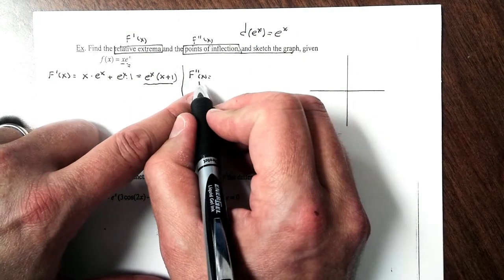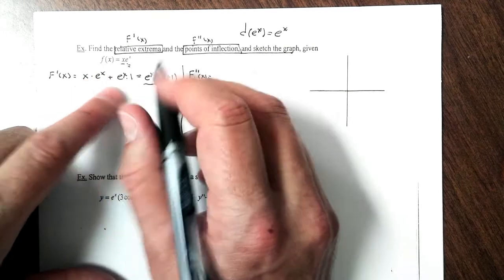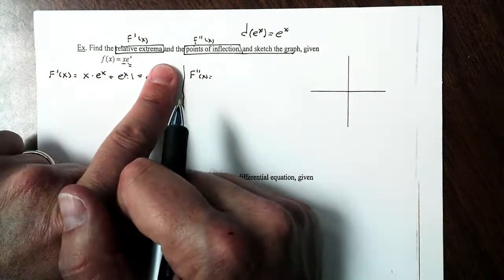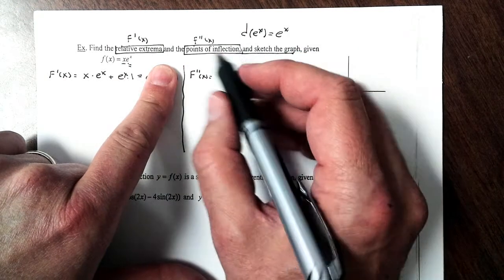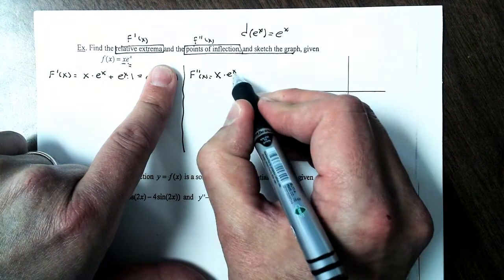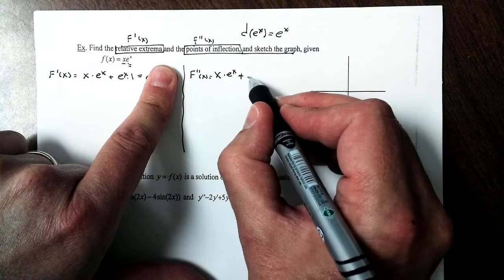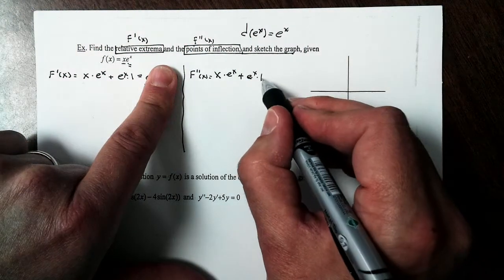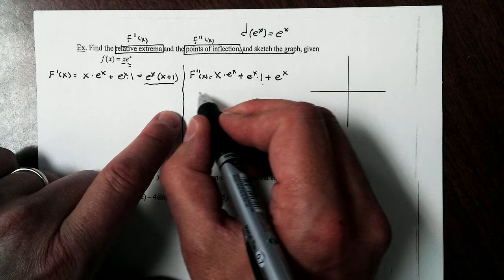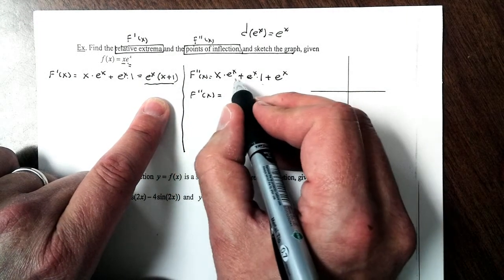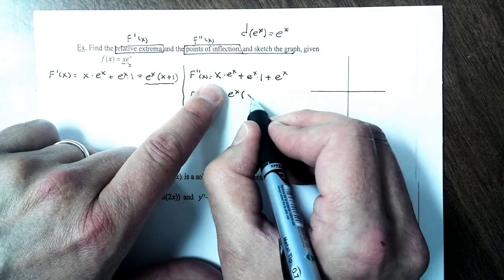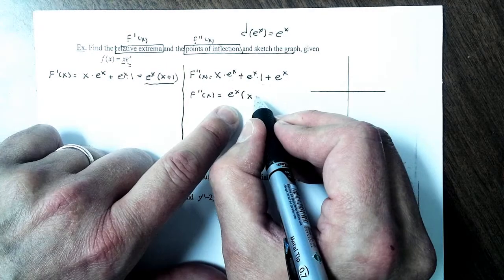Taking the second derivative using the product rule again: the first times the derivative of e to the x, which is e to the x, plus e to the x times the derivative of (x+1), which is 1, plus the derivative of e to the x. I'll factor out an e to the x, and that leaves me with x + 2. So the second derivative is e to the x times (x + 2).